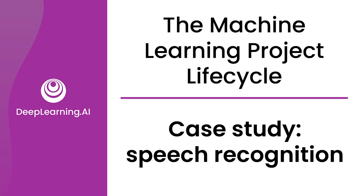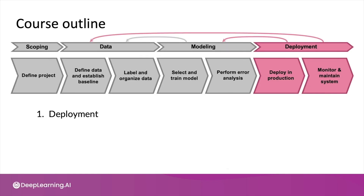You've seen the machine learning project life cycle. Let's briefly go over what you'll learn in the rest of this course. Even though I presented the life cycle going from left to right, I found that for learning these materials, it'll be more efficient for you to start at the end goal — starting from deployment and then working backwards to modeling, data, and then scoping.